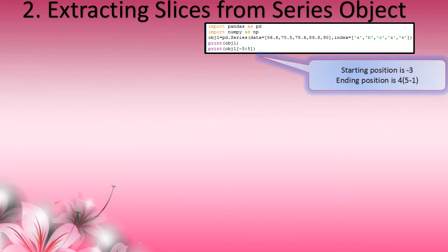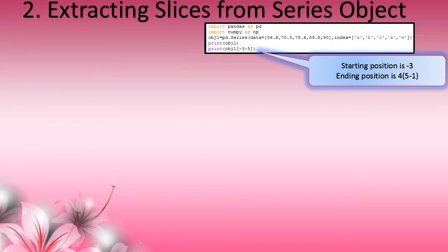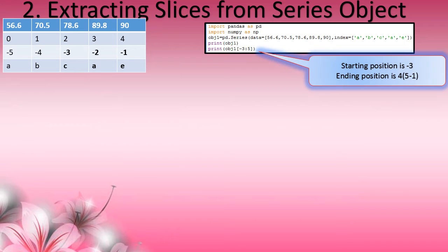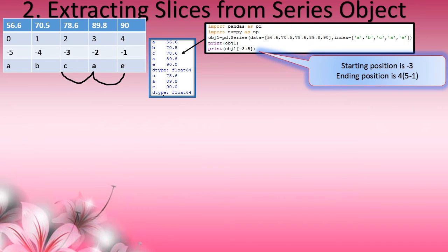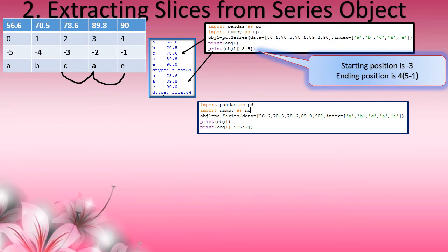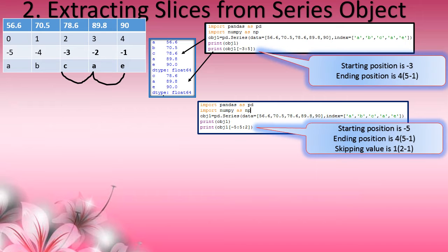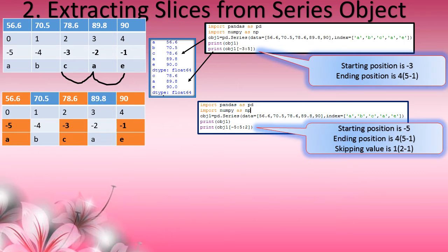Here, the starting value is minus 3 — that is backward indexing. Backward indexing starts from minus 1 in a Series object. Starting at minus 3 and ending value is 5 minus 1 = 4, so data from position minus 3 to position 4 is retrieved — answers 78.6, 89.8, and 90 are displayed. In the next example, starting position is minus 5 and ending is 5 minus 1 = 4, step is 2 minus 1 = 1. So minus 5 position value 56.6, skip one value, then minus 3 position 78.6, then minus 1 position 90 are printed.